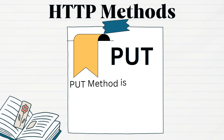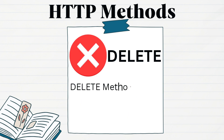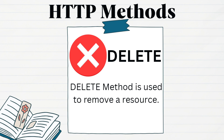Similarly, if we want to update something in existing data, the PUT method is used. Another important method is DELETE — it is used to remove a resource from a server. We have a few more HTTP methods as well which we do not use as frequently. So these are the most frequently used HTTP methods during development.